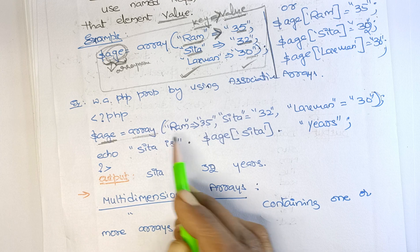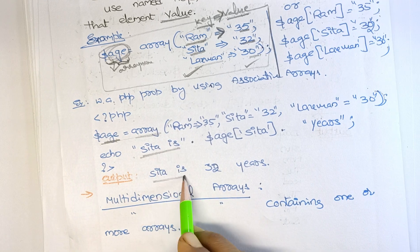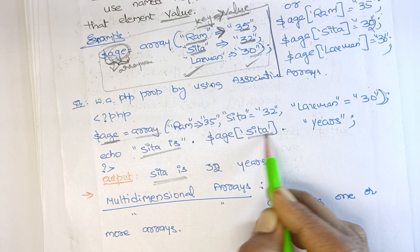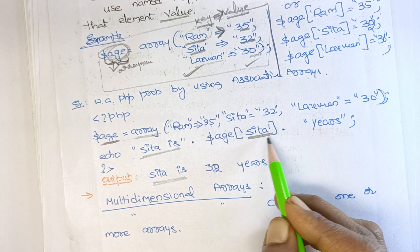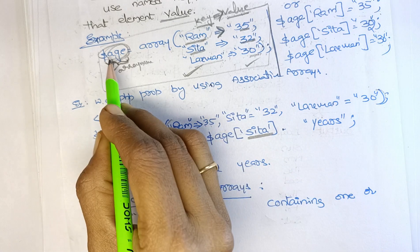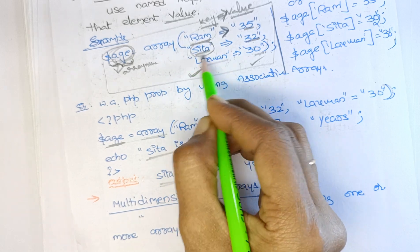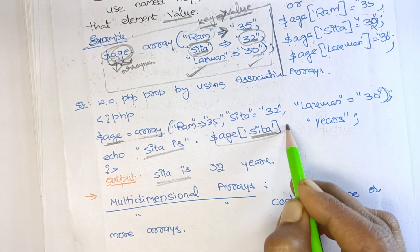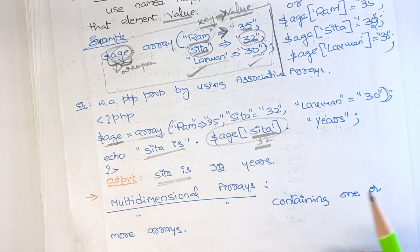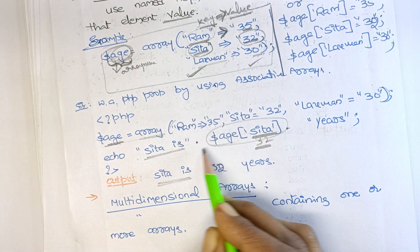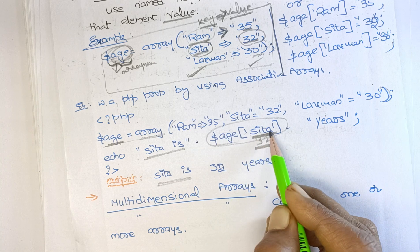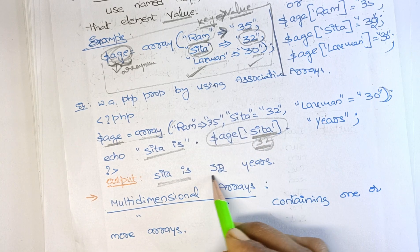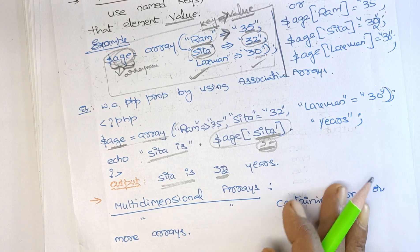To print a value, use echo — for example: echo 'Sita is', then concatenate dollar age of 'Sita'. This uses the key to look up the value. Dollar age of key 'Sita' holds the value 32, so 'Sita is 32' will appear on the output screen. The concatenation symbol is used to join the message with the array value.